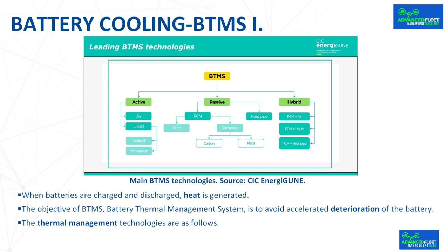The solutions adopted by manufacturers are diverse and each has its advantages and disadvantages. The objective of BTMS — battery thermal management system — is to avoid accelerated deterioration of the battery by managing the heat generated by its components so that it operates continuously under optimal temperature conditions. Although existing commercial cells can operate safely between -40°C and 60°C, the operating range preferred by manufacturers to maximize performance is between 15°C and 35°C. It is also recommended that within the battery pack there is no temperature difference greater than 5°C between cells.